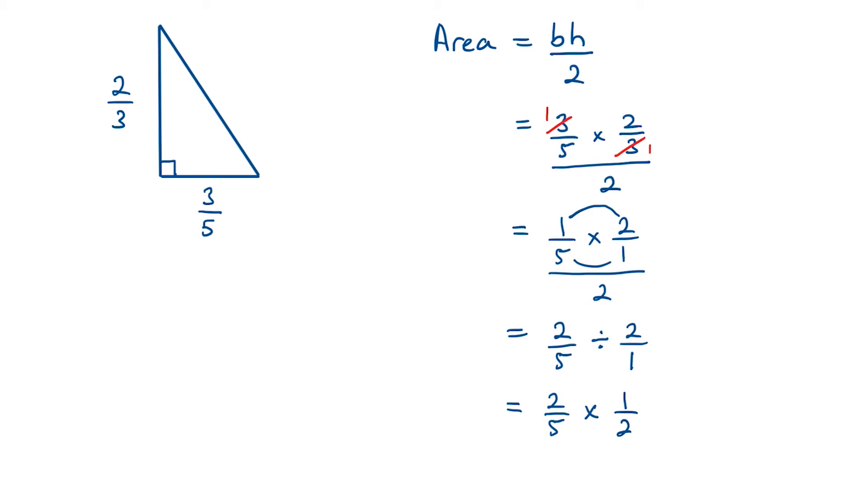Now looking at those I can actually cancel these 2's. 2 goes into 2 once. And just finishing off over here, what I've got is 1 over 5 multiplied by 1 over 1, which is simply 1 over 5.